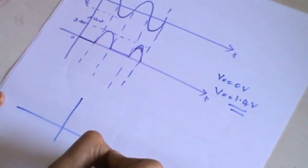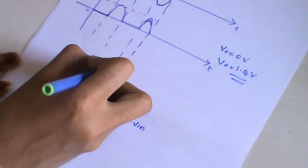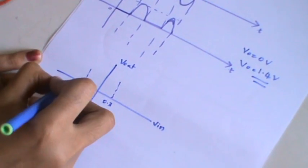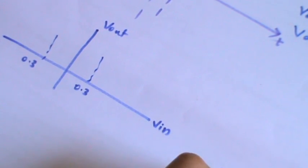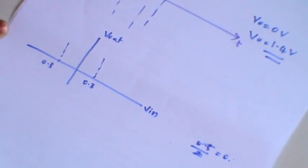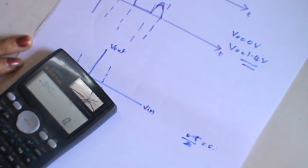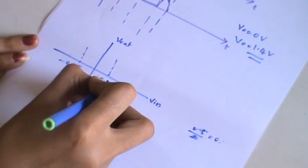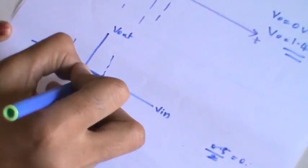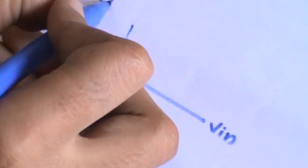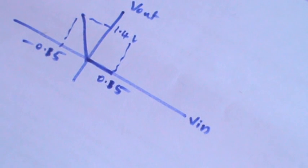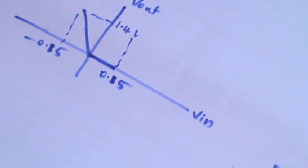You can see in the CRO as well as you can draw the transfer characteristic. If you take the transfer characteristics, this is the V in and this is the V out. This is 0.3 volt peak to peak. 0.3 volt peak to peak means 0.3 by 2, you will get 0.15. This will be minus 0.15, this will be plus 0.15. Positive side it is 0, negative side you should get 1.4 volt. So the transfer characteristic should look like this. We can see and observe it in the CRO now.